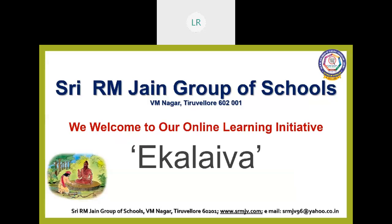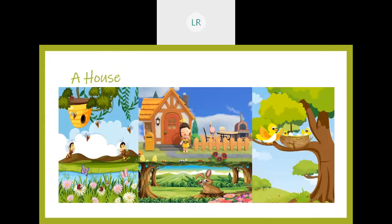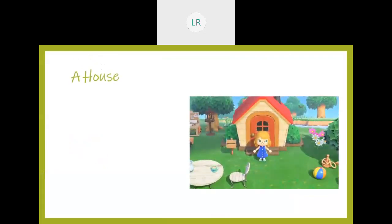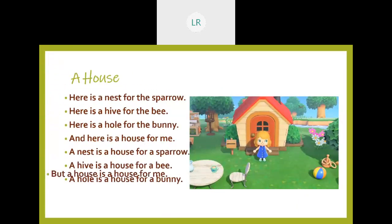Okay children, shall we move to the poem now? Hi children, what are the things you are seeing in this picture? You can see a bird, bee, bunny, and a little girl. We are going to see the houses for all these living things. Shall we move? Shall I sing a song? Will you sing with me? Yes!